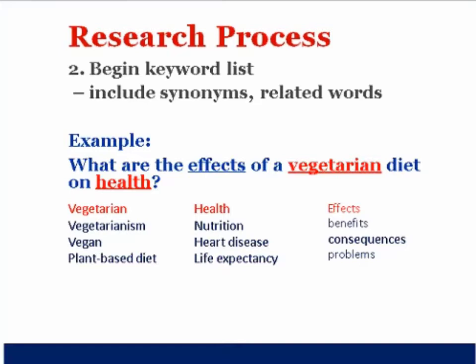Think of synonyms and related words. Vegetarian might become vegetarianism; a related word would be vegan — it's not exactly the same, but it's close. Plant-based diet is also similar. Health might go into nutrition or certain health aspects like heart disease or life expectancy.